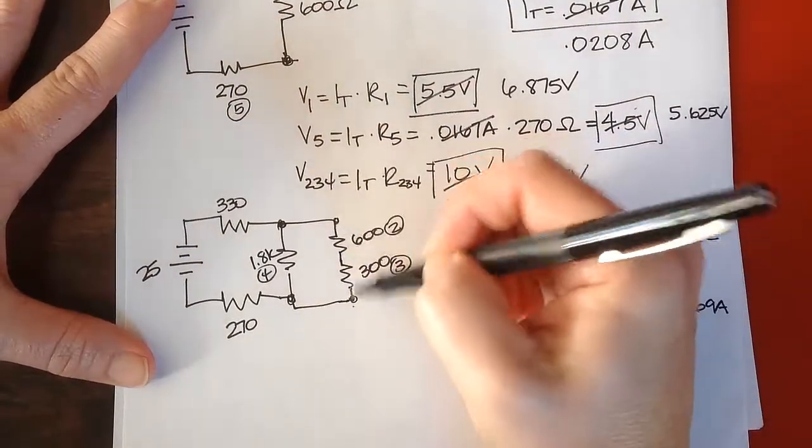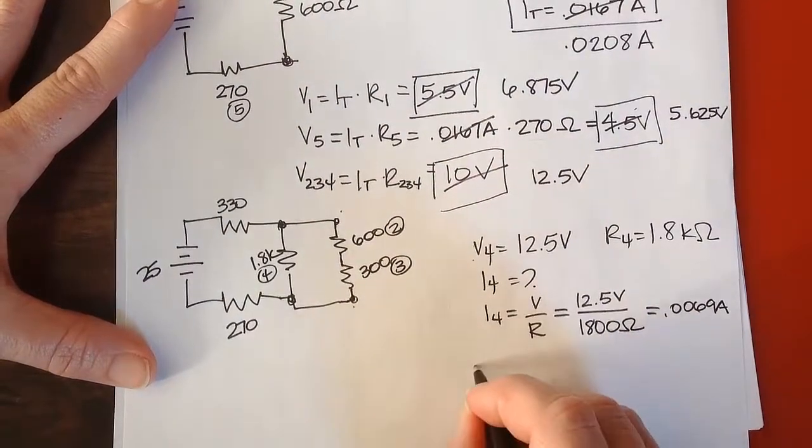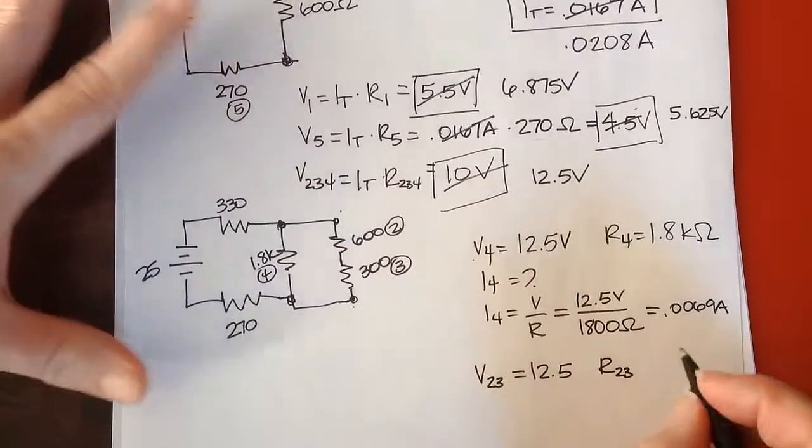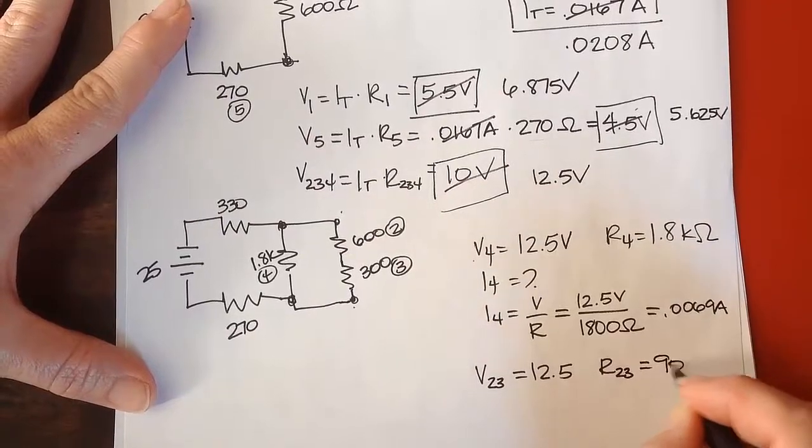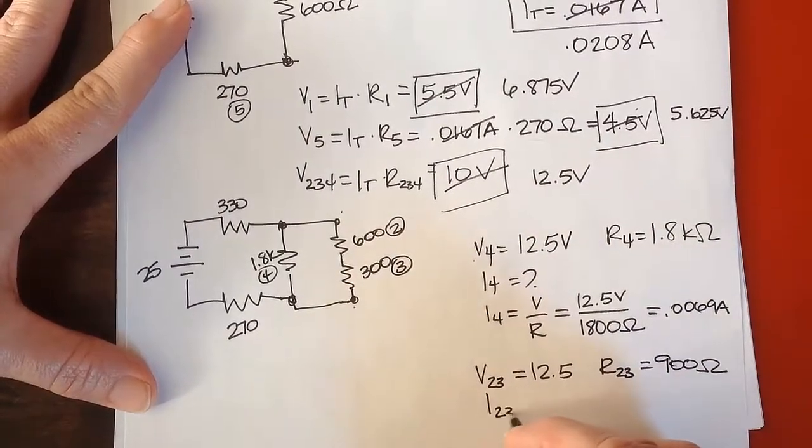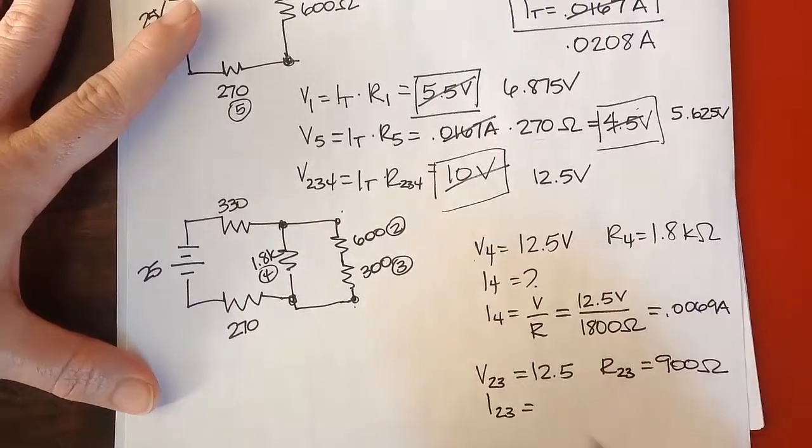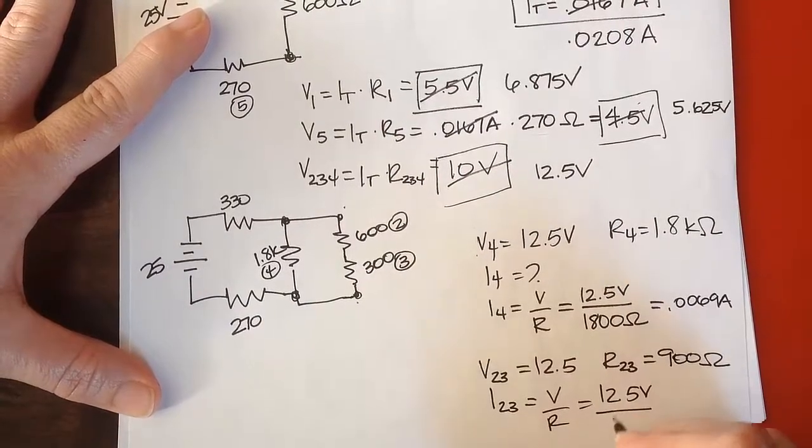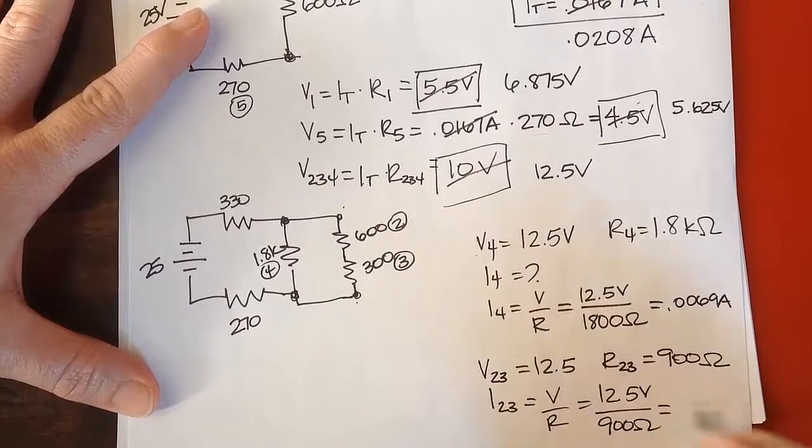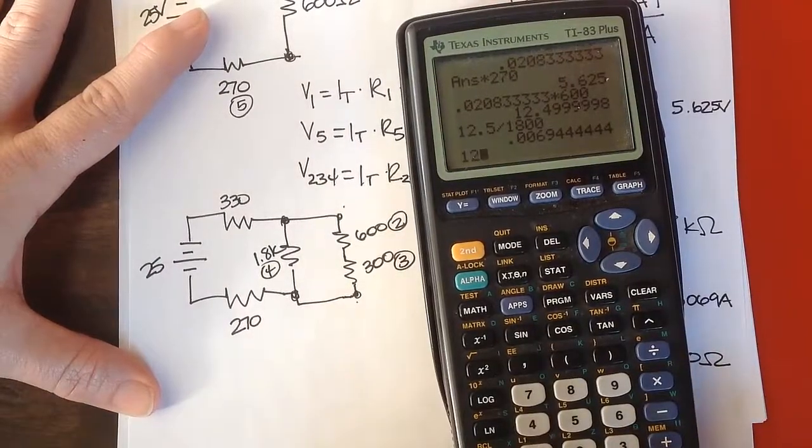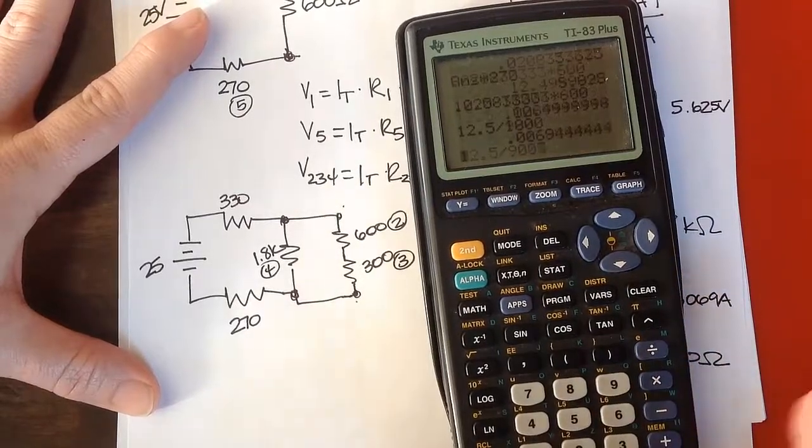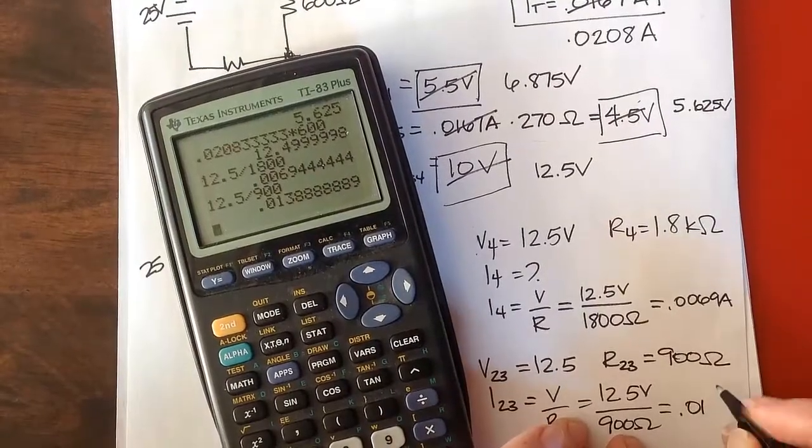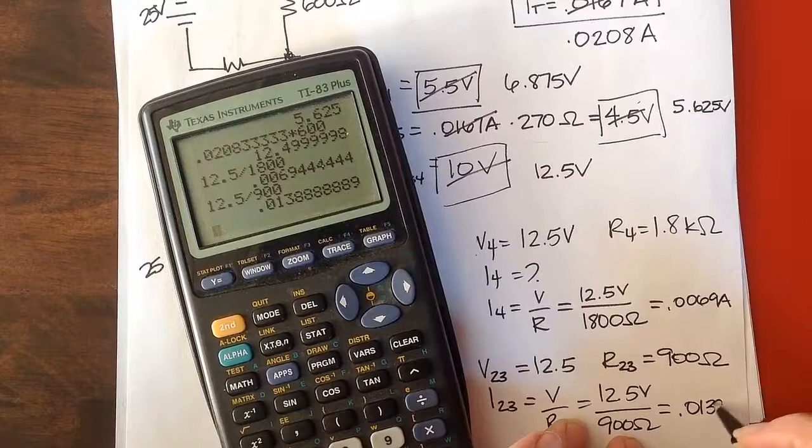So the voltage drop across this one is also 12.5. So V2,3 is equal to 12.5. That resistance 2,3, the equivalent was 900 ohms, right? So I2,3 is V over R, 12.5 volts divided by 900 ohms. And 0.0139 amps.